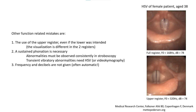Other issues with recordings not included in the study but important for the roundtable discussion at the congress included the use of different head registers. Upper and lower register are visually different from one another and the lower should be used as standard. It is important to use a sustained phonation. If stroboscopy is used, any abnormalities must be observed consistently, and only high-speed video can be used if the abnormalities are transient. The frequency and decibel are most often recorded automatically, but it is important to ensure that the equipment is including them.